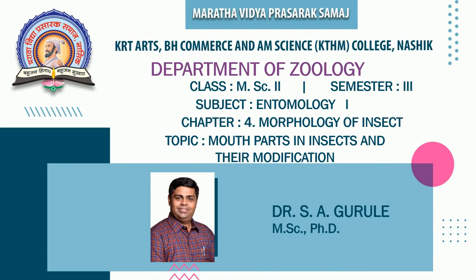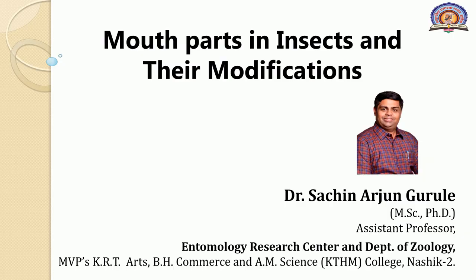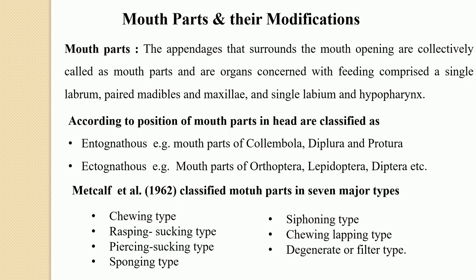In the previous video of entomology, we learned the different types of antennae among insects, the sensilla on the antennae, and the functions of antennae. With this we completed the first appendages belonging to the head region of a generalized insect. From this lecture we are going to start with the mouth parts in insects and their various modifications, and today we will discuss the first classical mouth part — the mandibulate mouth parts.